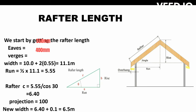Our roof pitch angle theta is 30 degrees. Using the total run of 5.55 meters, we get the rafter length C using Pythagoras: C = 5.55 divided by cos 30, which gives us 6.40 meters. When laying the tiles we need to add a projection of 100 mm at the eave, so 6.40 plus 0.1 gives us a rafter length of 6.5 meters. This will be the width we use to calculate the roof area.